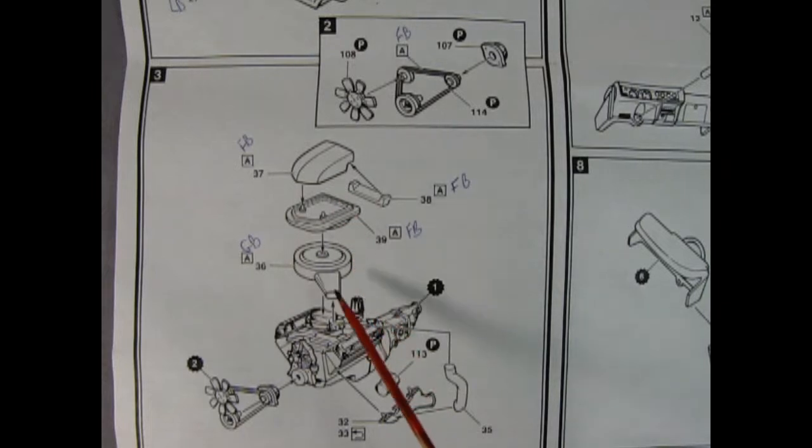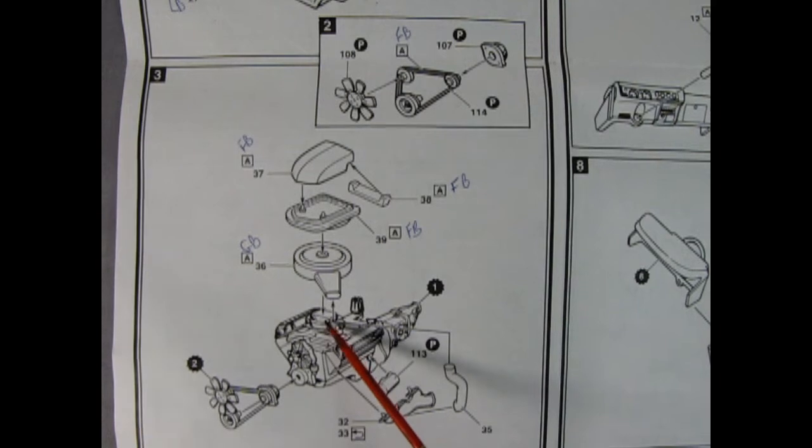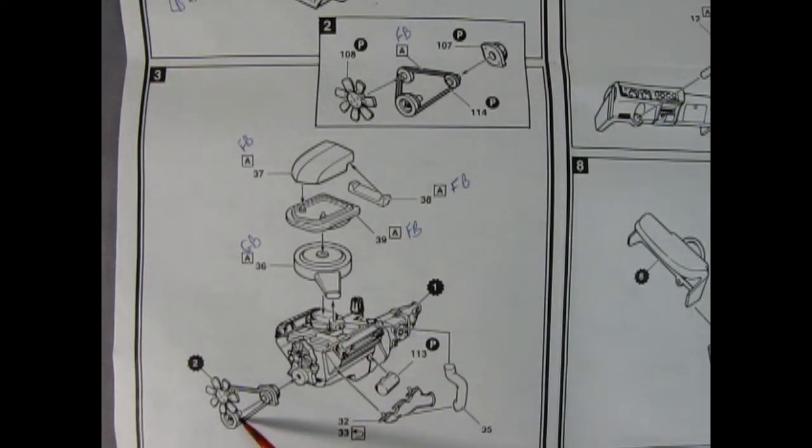There we have our fans and pulleys being put in place, we've got a starter motor as well as this breather pipe which goes onto our exhaust manifold and there should be an exhaust manifold for the other side of the engine block.